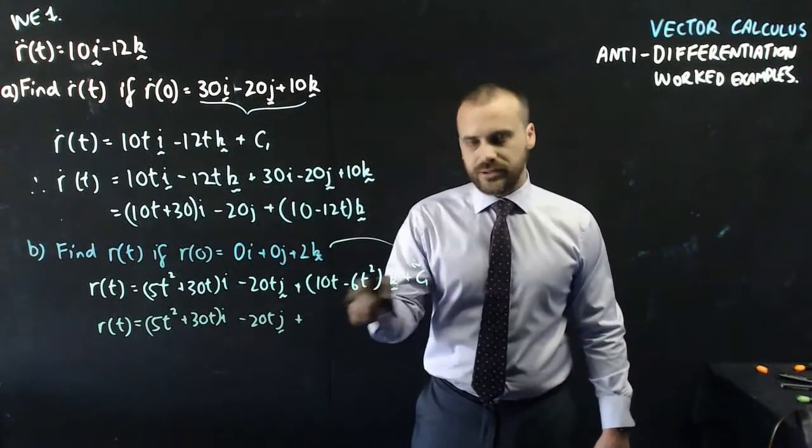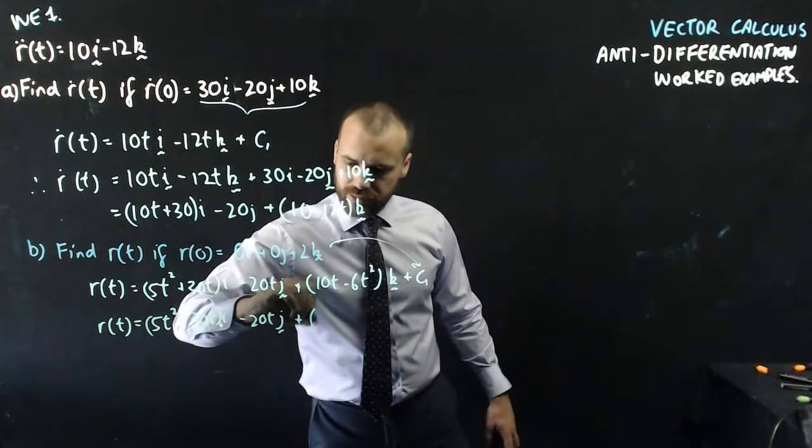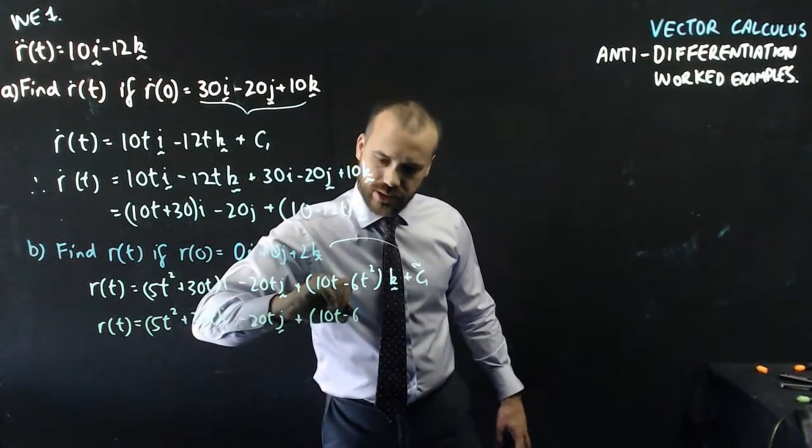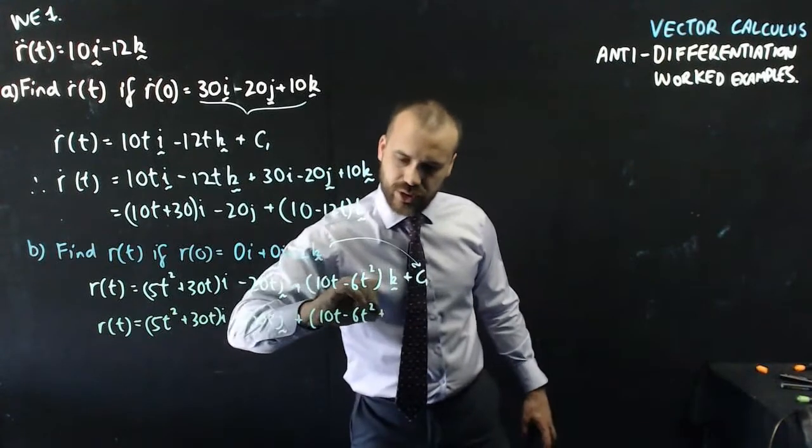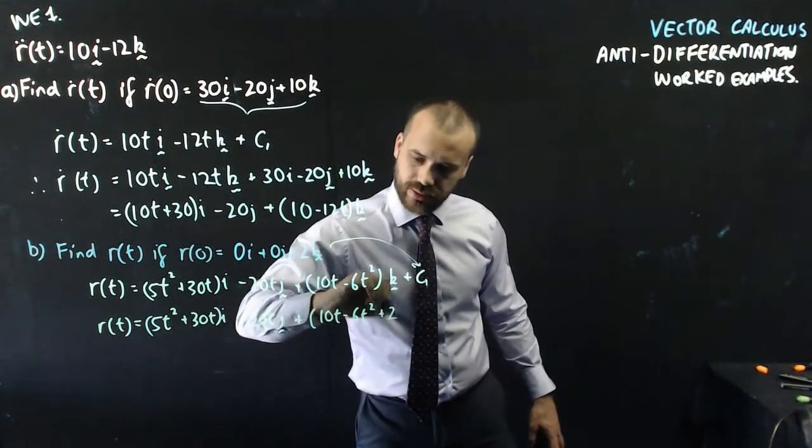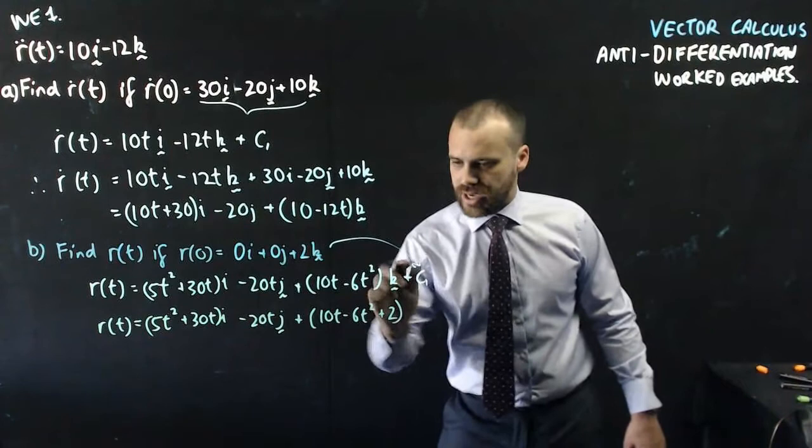Plus, and then I get a neat little quadratic here, because I'm going to get 10t minus 6t squared, plus that 2k which got put in here. Just 2, because k sits on the outside.